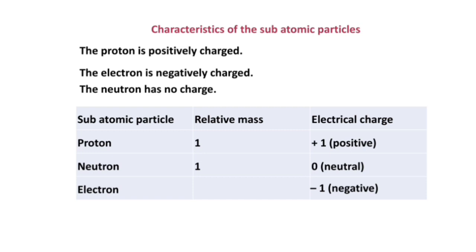What are the characteristics of the subatomic particles? Number one, the proton is a positively charged particle found in the nucleus. The electron is negatively charged and found in the energy level. The neutron has no charge and is found in the nucleus. In the table of subatomic particles: the proton has a relative atomic mass of one and an electrical charge of positive one. The neutron has a relative atomic mass of one and is neutral. The electron has negligible relative atomic mass and a charge of negative one.